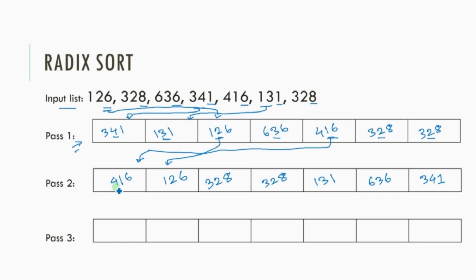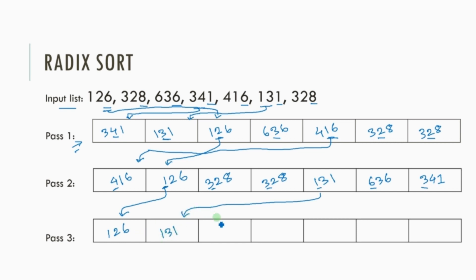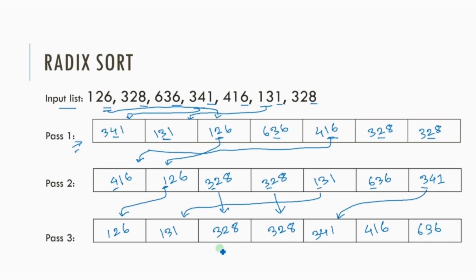In the next iteration, the leftmost digit will be considered as the key. For 416 the digit 4 is the key, and for 126 the digit 1 is the key. We identify the keys for the other numbers similarly and sort the list again. The smallest key is 1, so 126 is placed first, 131 second, 328 third, 328 fourth, 341 fifth, 416 sixth, and 636 seventh. We can see that this is the final sorted array.